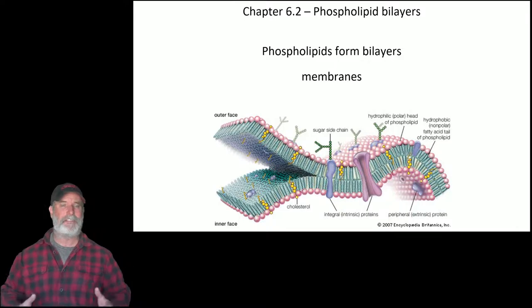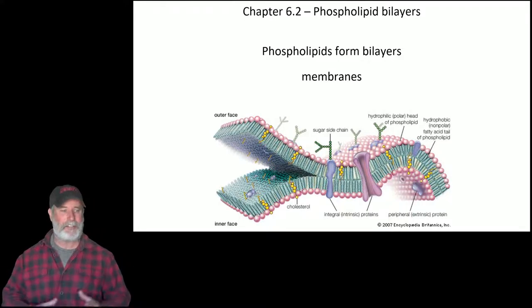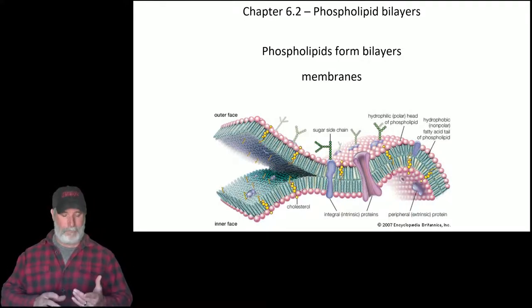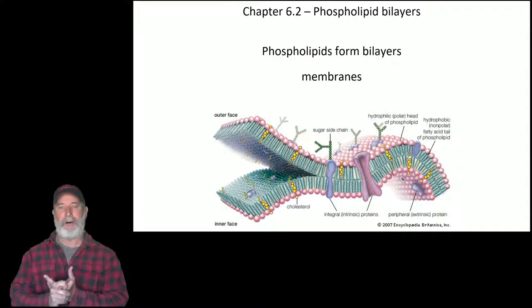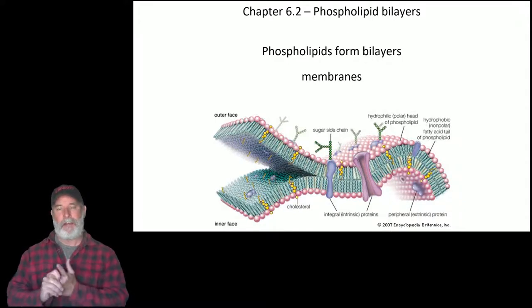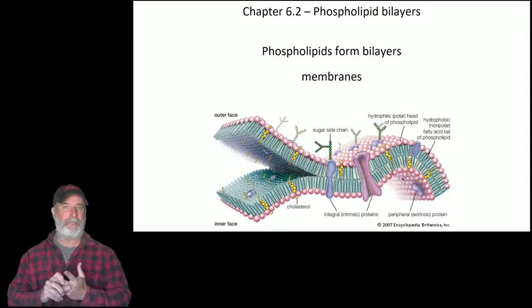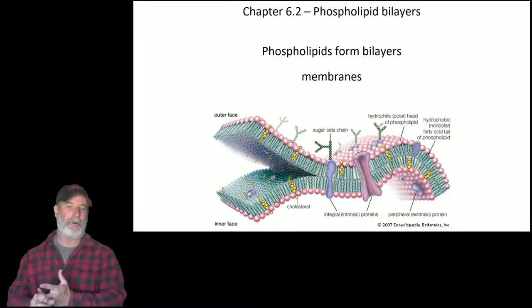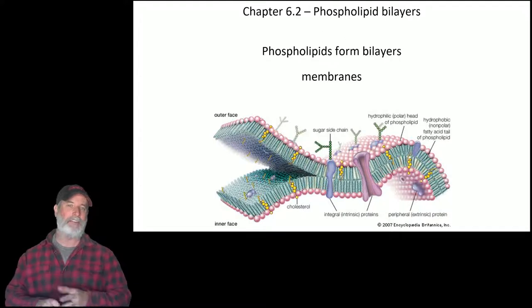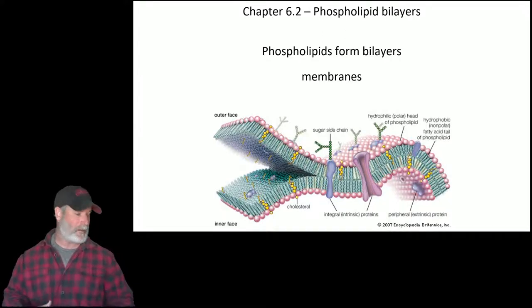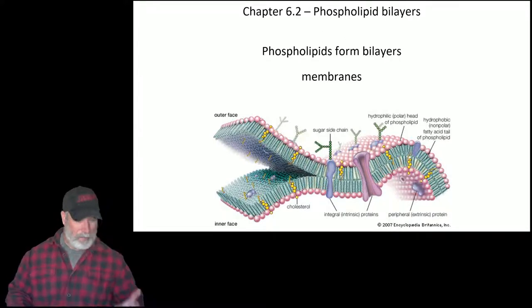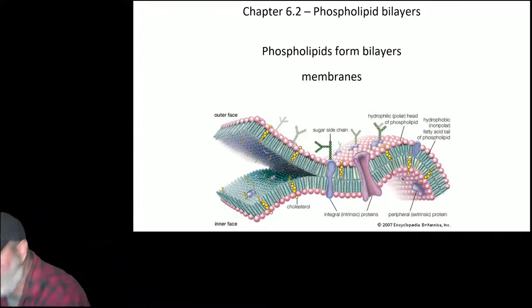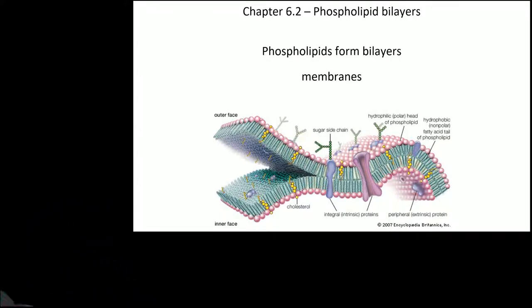Let's break down the word 'phospholipid bilayer.' Phospho means there's a phosphate head; lipid means there's a lipid attached to it; and bilayer means it has two layers.